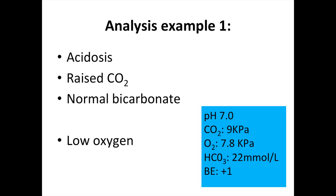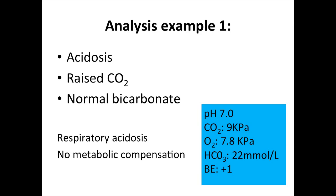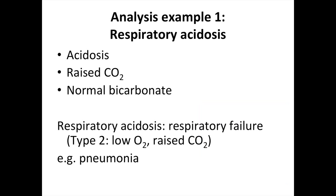Looking at example 1, the pH is acidotic. There is a raised carbon dioxide but a normal bicarbonate, with a low oxygen. The raised carbon dioxide is in line with the pH, so the change is respiratory in nature, and there does not appear to be any metabolic compensation. Example 1 is a respiratory acidosis with no metabolic compensation. This could be due to respiratory failure, such as pneumonia.